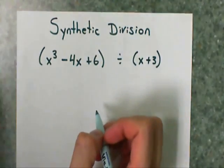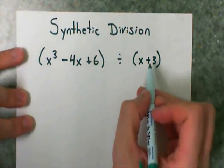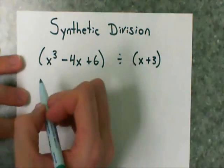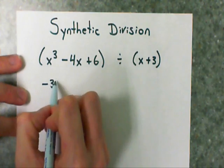Here is a second example of synthetic division. What I'm going to do is take the number after the x, the plus 3, and use the opposite sign, so I'm going to use a negative 3 and place it in a little box over here.